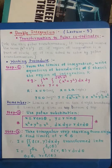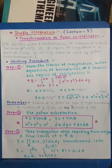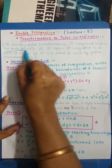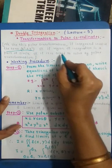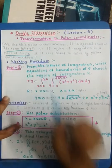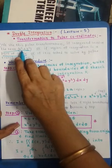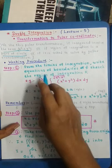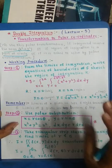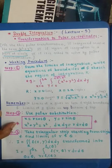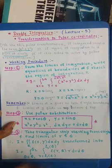This polar transformation is useful if and only if our integrand involves the term x squared plus y squared, or if the region of integration is a part of a circle, or if it is asked to solve double integration by using polar transformation. In these three situations we use polar coordinates.